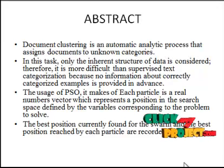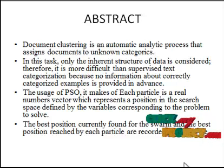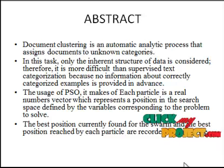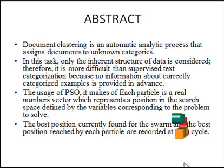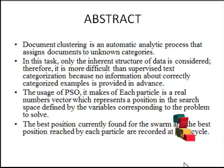Document clustering is an automatic analytic process that assigns documents to unknown categories. In this task, only the inherent structure of data is considered. Therefore, it is more difficult than supervised text categorization because no information about correctly categorized examples is provided at once.